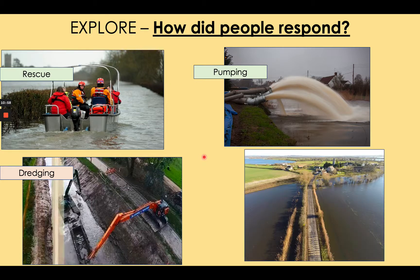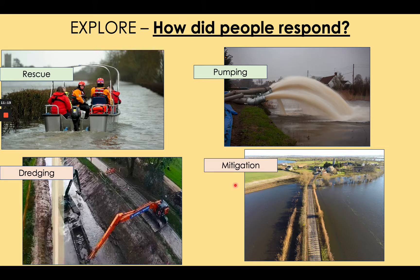The final long-term response was that roads throughout Somerset were raised, so that the next time it flooded — four years later — the flood waters did not cover the roads, allowing transportation to continue. Normal life, and in particular emergency services and transport to school and jobs, were able to continue. These are examples of mitigation.